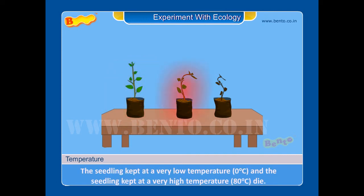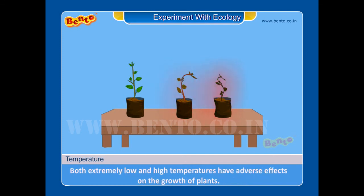The seedling kept at a very low temperature, 0 degree Celsius, and the seedling kept at a very high temperature, 80 degree Celsius, die. Both extreme low and high temperatures have adverse effects on the growth of plants.